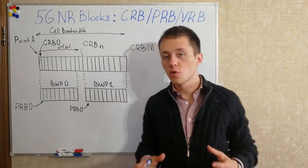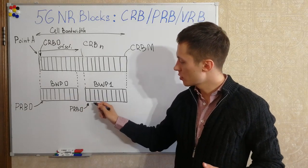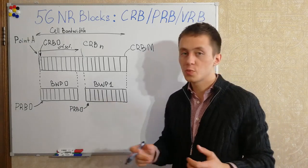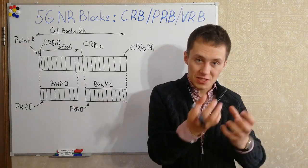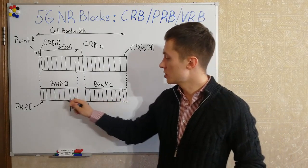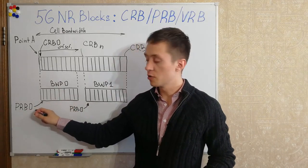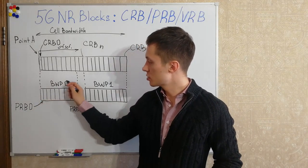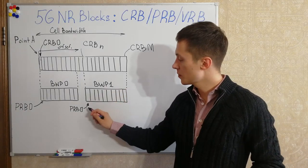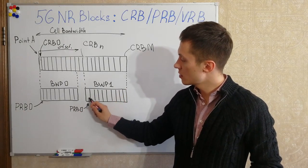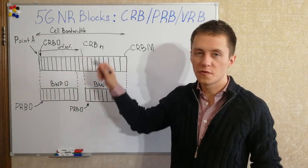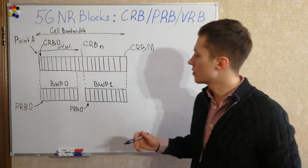When it comes to physical resource blocks, physical resource blocks are used only within bandwidth parts, because bandwidth parts are usually a user equipment-specific thing. As you can see from my example, physical resource block 0 starts here in one bandwidth part and also from 0 in another bandwidth part. But resource block 0 can have an association with common resource block 55, for example, or another number.